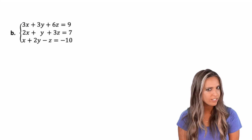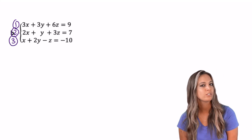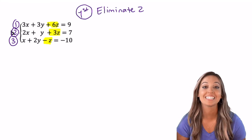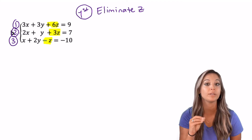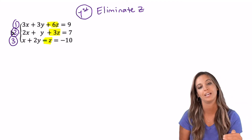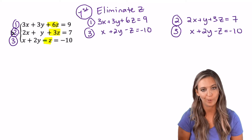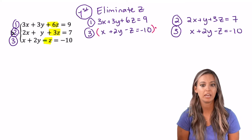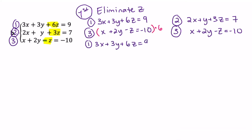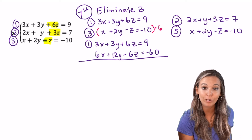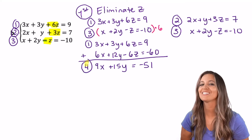Now it's time for another example. Label the equations one, two, and three. The variable that would be nicest to eliminate from all three equations is z — because equation three has z with the opposite sign, so we can pair equations one and three together, and two and three together. Things aren't as nice this time though: adding straight down won't eliminate z yet. We need to multiply equation three by six. Multiply equation three by six, then add down to eliminate z. Check that you multiplied everything correctly — including getting negative 60.